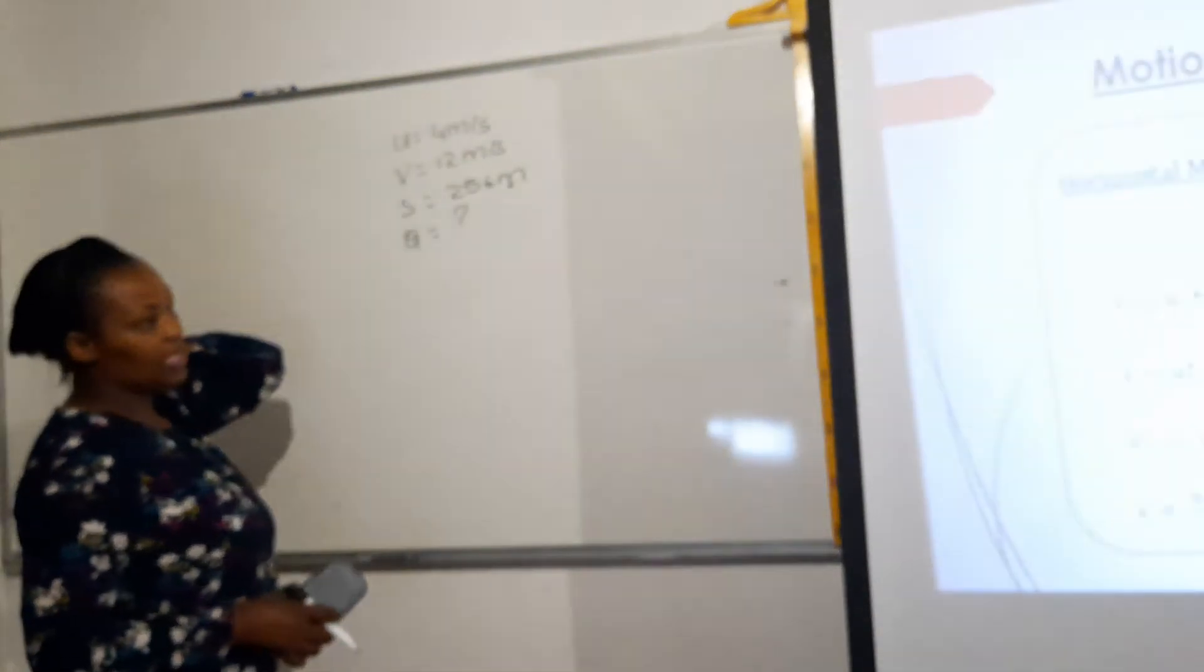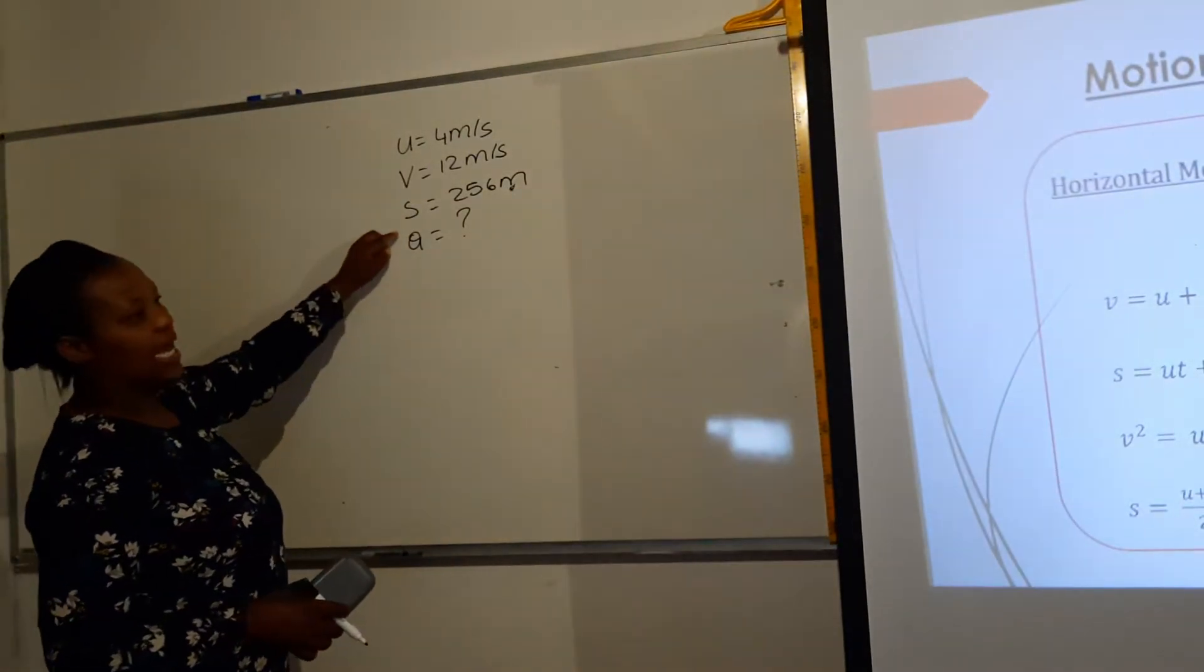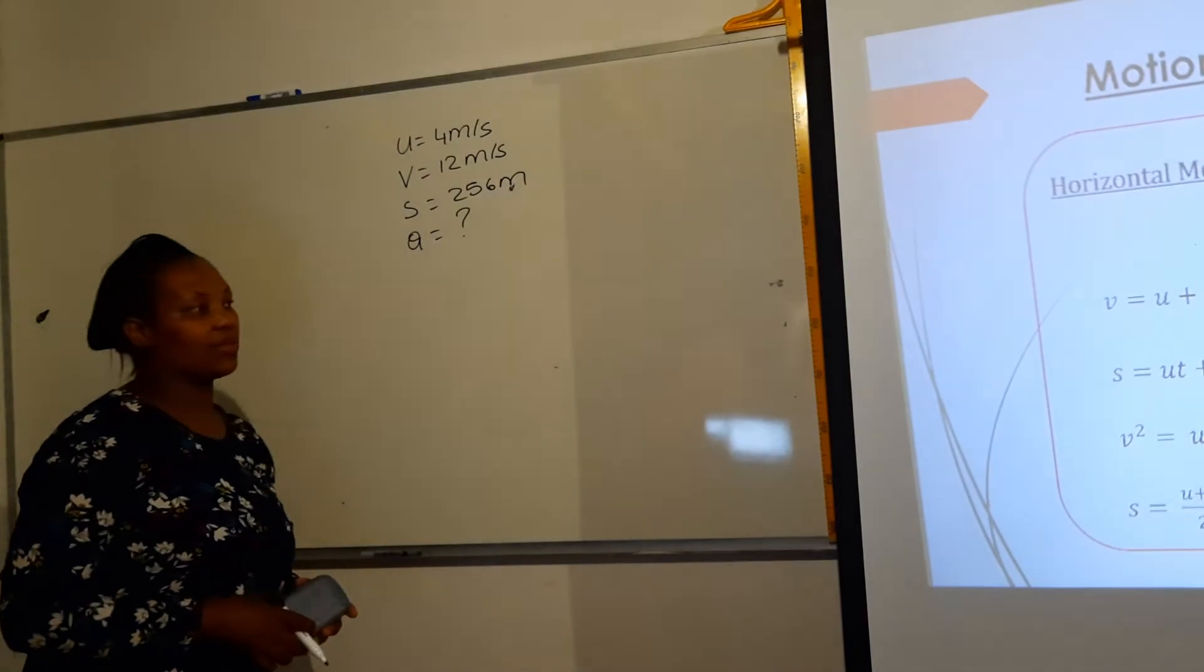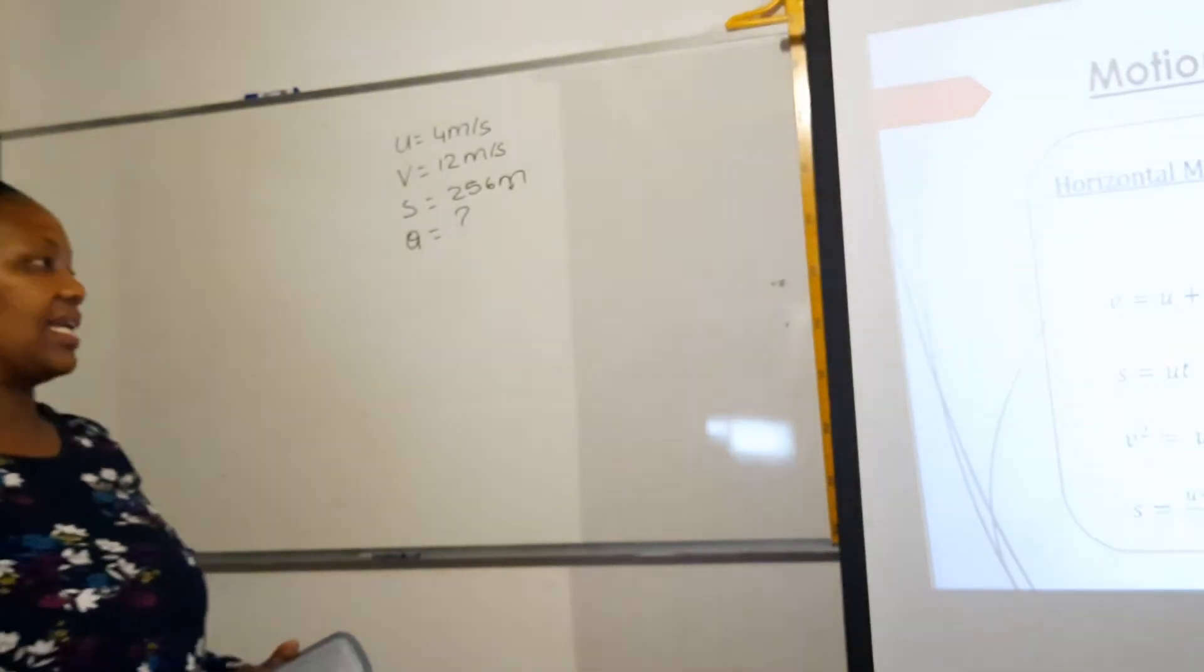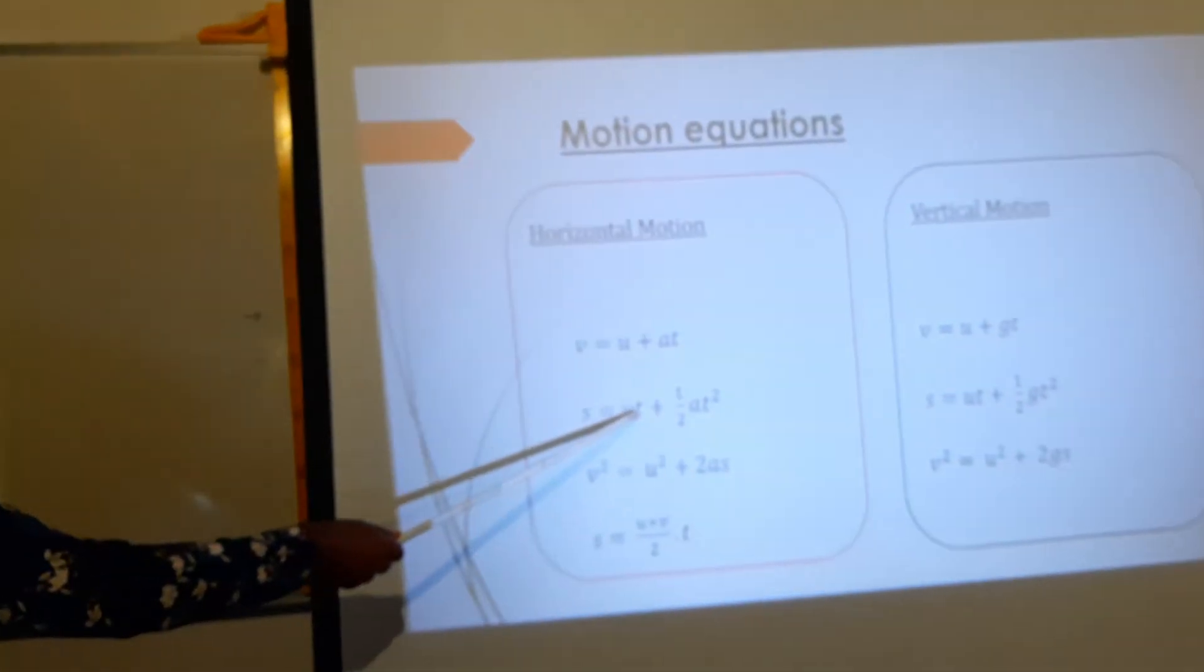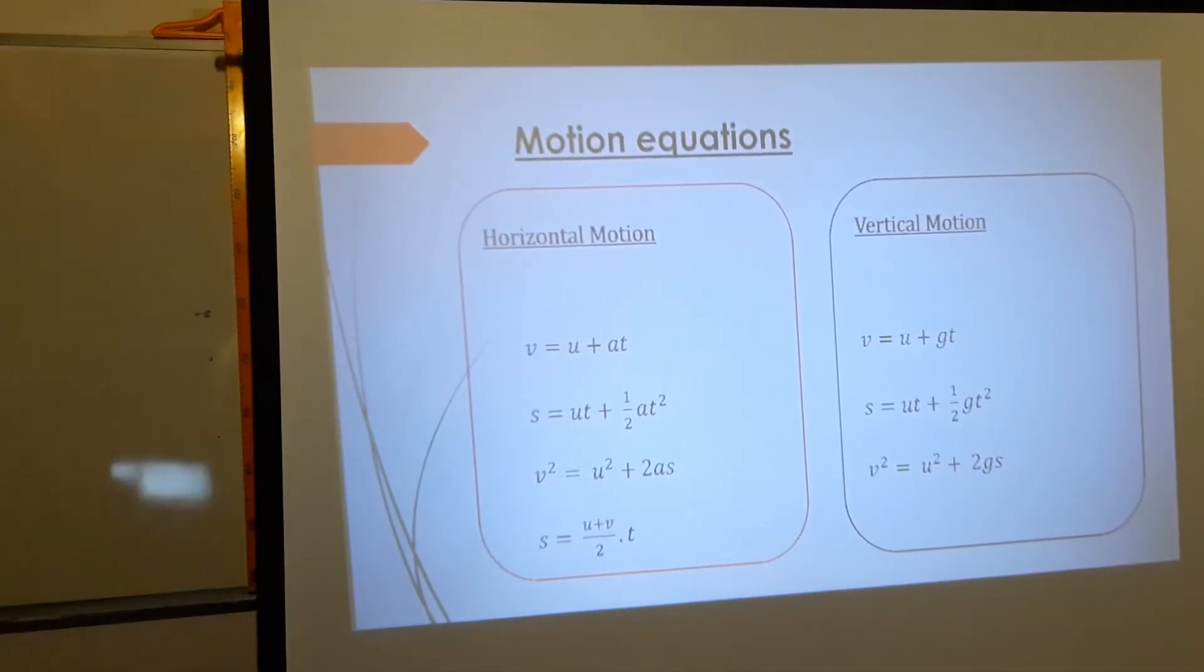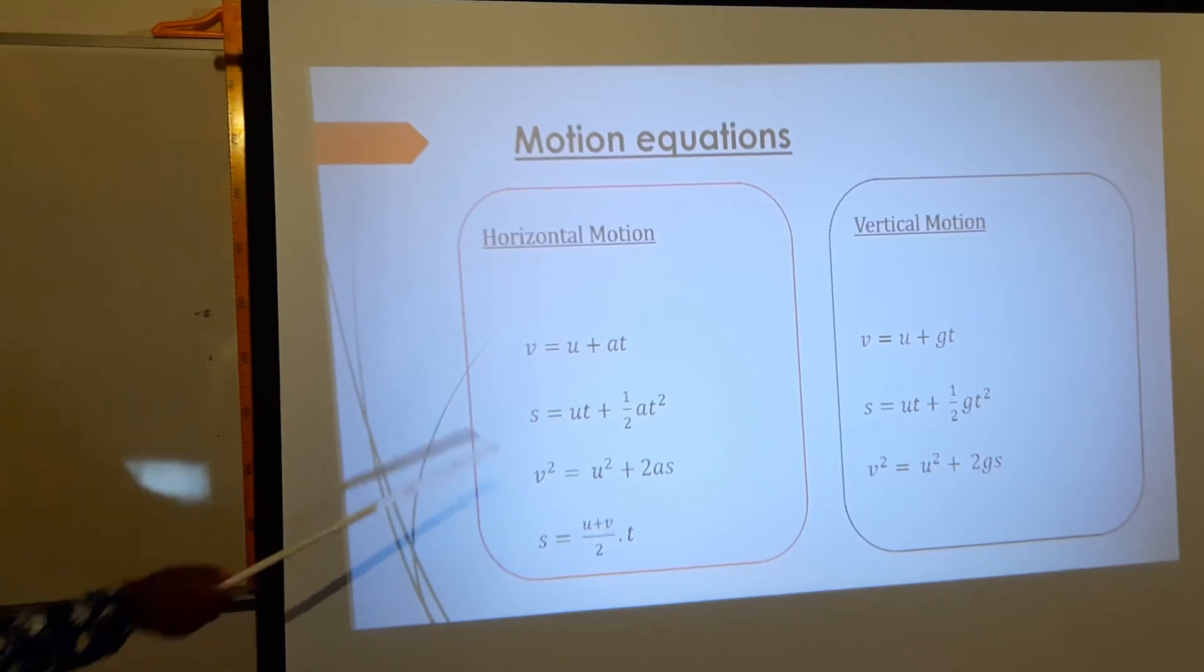Then we go to the second one. The second one contains a, which we are looking for. And then we ask ourselves, on the second equation, do we have s given? Yes. Do we have u given? Yes. Do we have t given? No, so we can't use this one also because we are not given time.